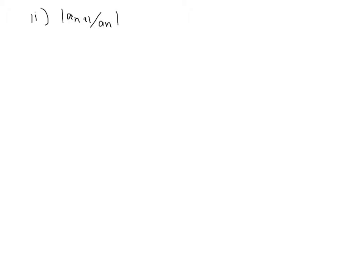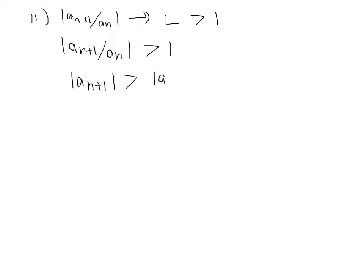To prove the second case, it's actually even easier. If a_sub_(n+1) over a_sub_n approaches some L greater than 1, we know that eventually the ratio is bigger than 1, meaning |a_sub_(n+1)| is greater than |a_sub_n|. Since the terms are non-zero, the limit as n goes to infinity of a_sub_n is not 0, so the series diverges by the test for divergence.